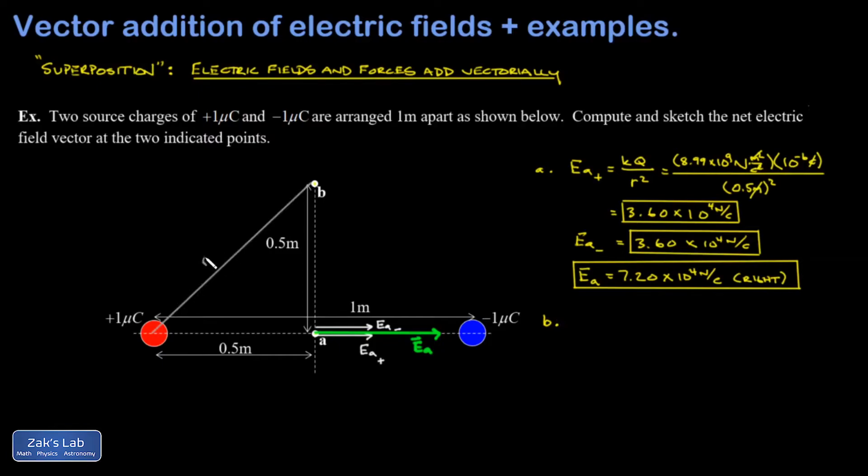So there's the distance R, and that's the hypotenuse of a right triangle whose legs are both 0.5. So I'm going to do that as a side calculation over here. R is the square root of 0.5 squared plus another 0.5 squared. And when I crunch those numbers, I get 0.707 meters.